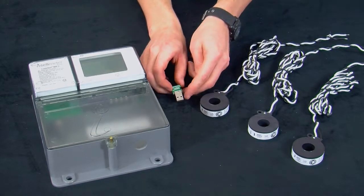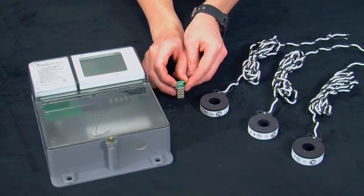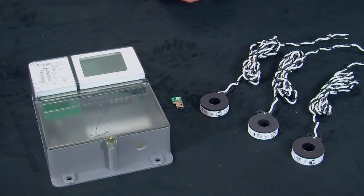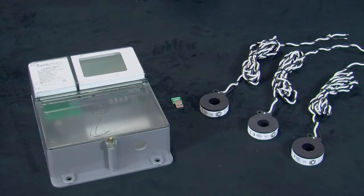And lastly, our CT programming USB dongle. This tells the meter which type of CTs are being used with it. Take a quick moment to go over your paperwork and make sure that the number on the USB dongle matches the rating of the CTs. This information can be found on either your packing slip, shop drawings, or other paperwork provided.